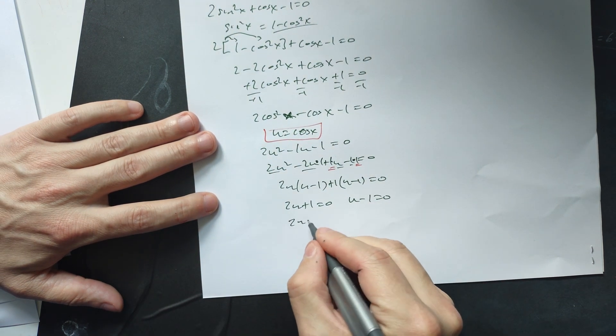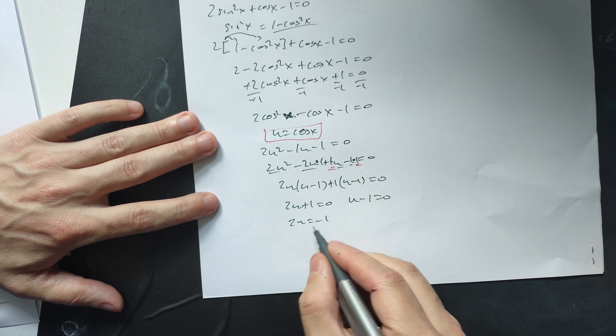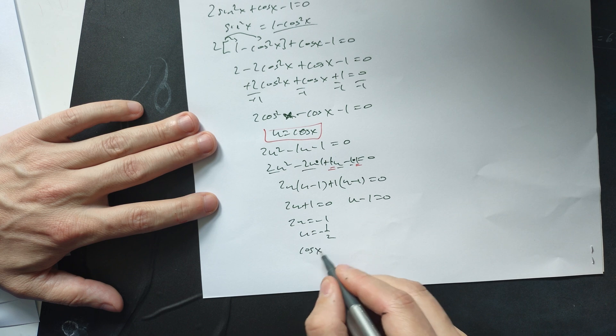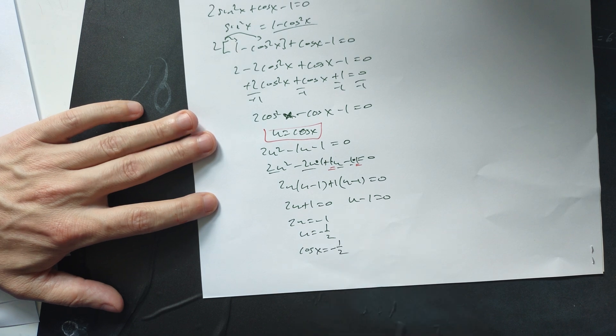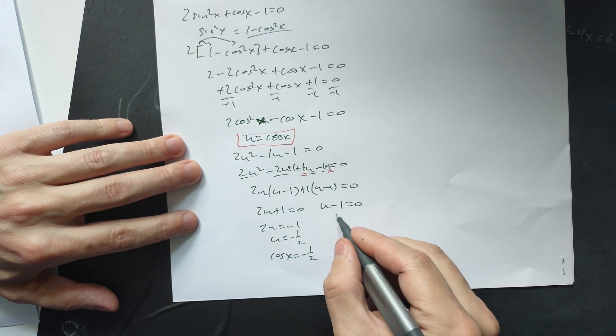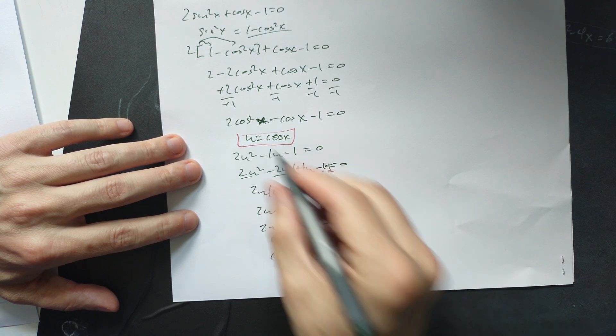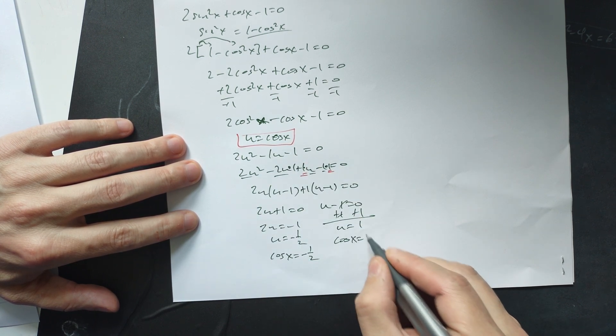So that means the following. 2u is equal to negative 1. Subtract 1. Divide by 2. So u equals negative 1 half. That means that cosine x equals negative 1 half. All right. From this one you just add 1. So cancel. That means u is equal to positive 1. But u is cosine x. So it's cosine x equals 1.